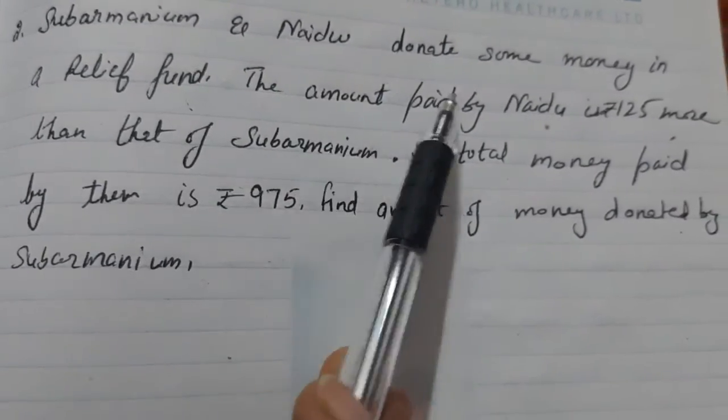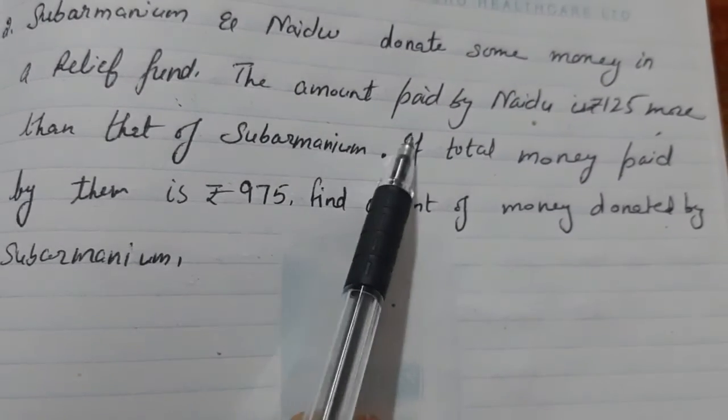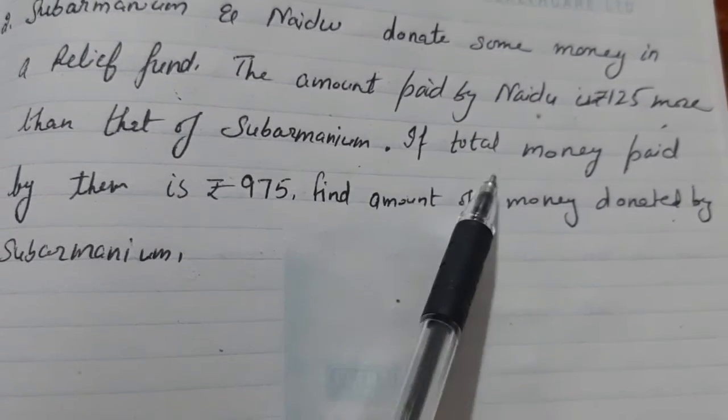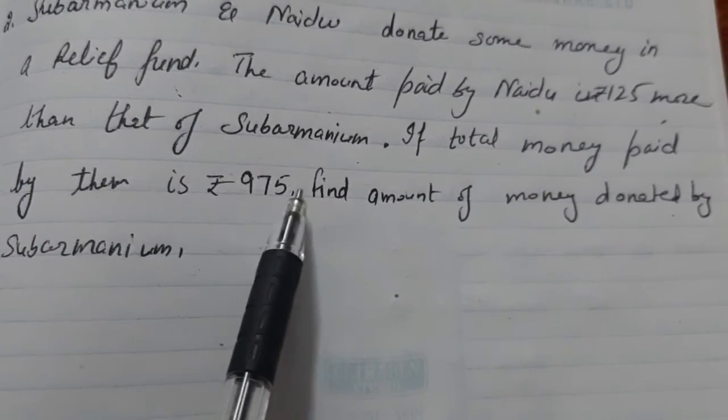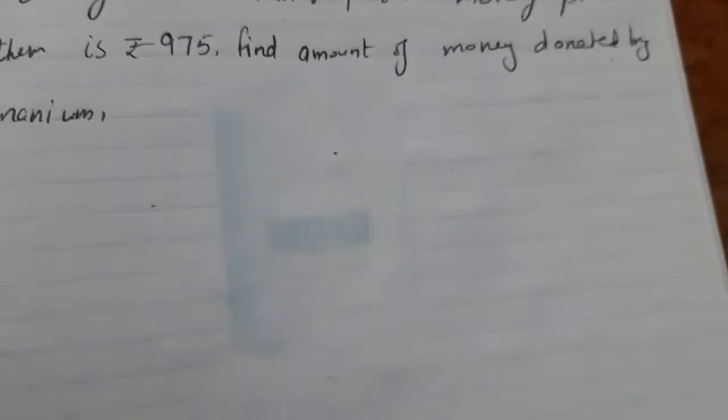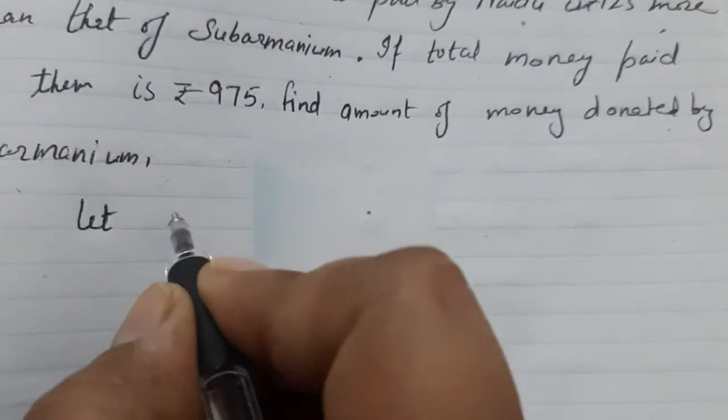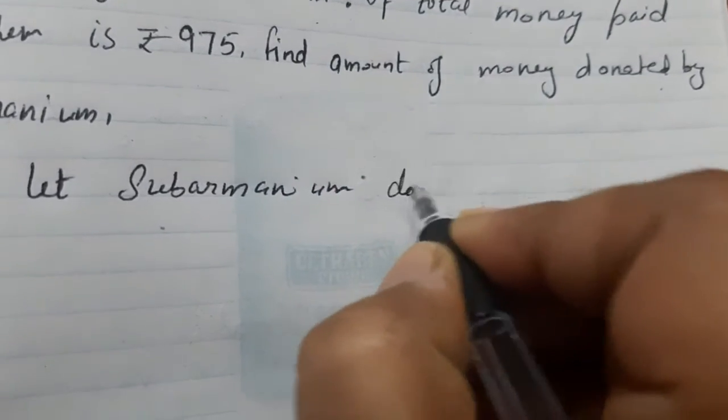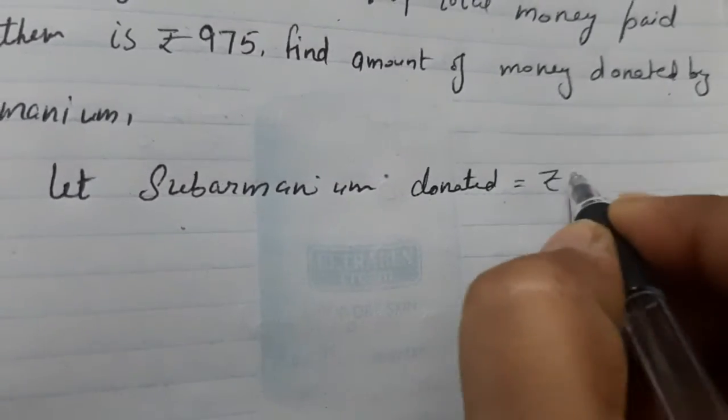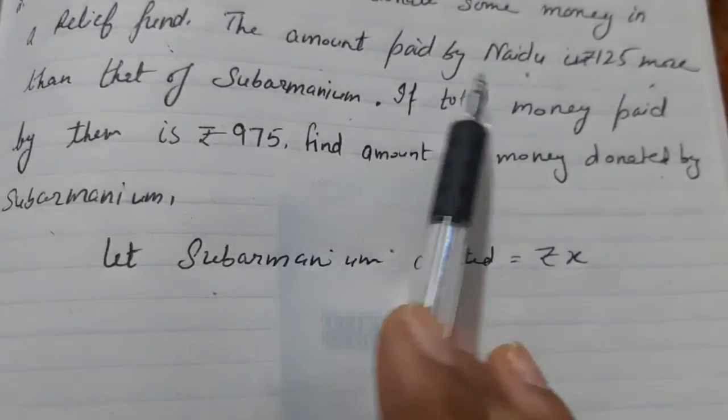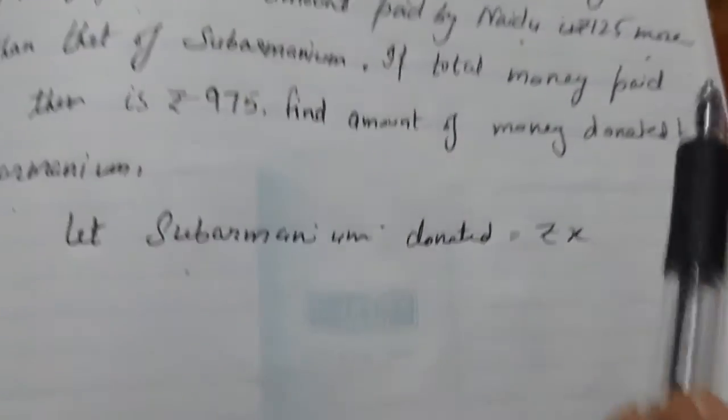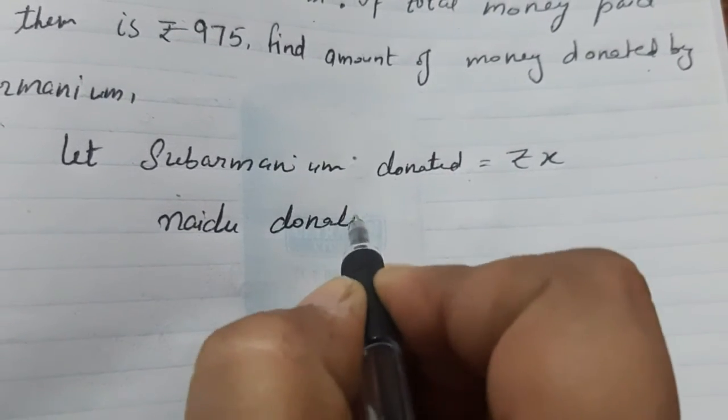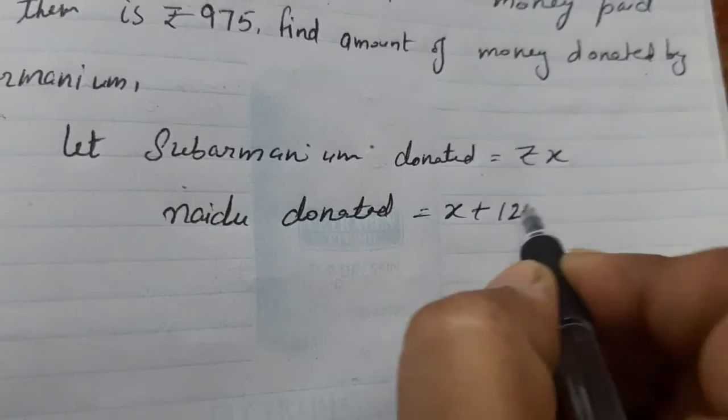Next is Subramaniam and Naidu donate some money in the relief fund. The amount paid by Naidu is Rs. 125 more than that of Subramaniam and total money paid by them is Rs. 975. Find the amount of money donated by Subramaniam. So, first of all, we will suppose let Subramaniam donated Rs. X. And, the amount paid by Naidu is Rs. 125 more than that. It means Naidu donated how much? X plus 125.